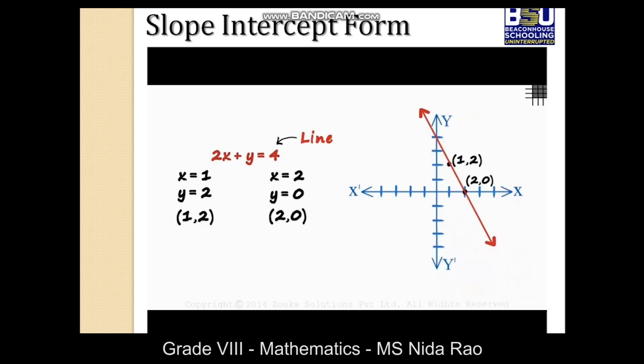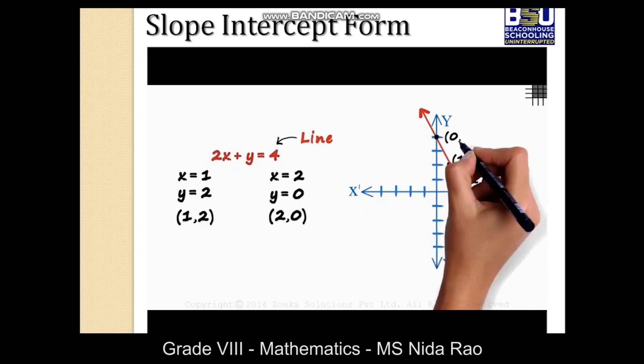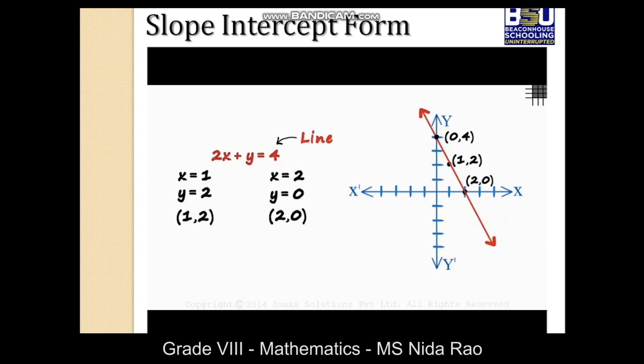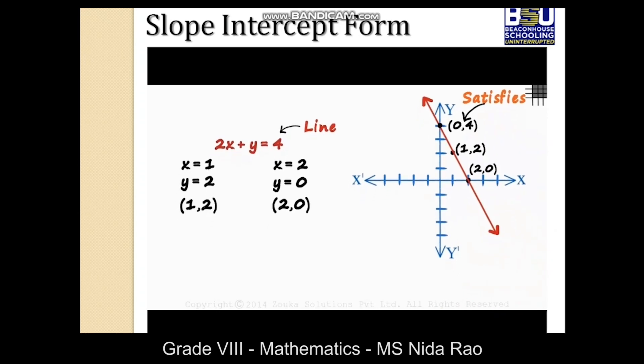Just to verify if this line is correctly drawn, take another point on the line and see if it satisfies this equation. Take this point for instance, 0 comma 4. If we substitute 0 in place of x and 4 in place of y, we do get a 4. It satisfies the equation.